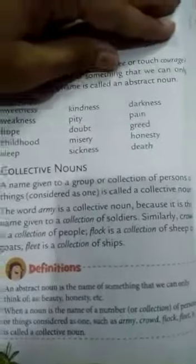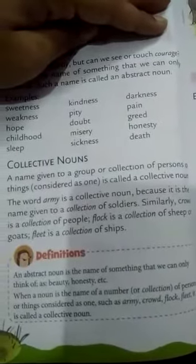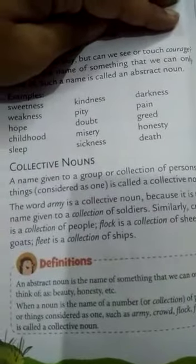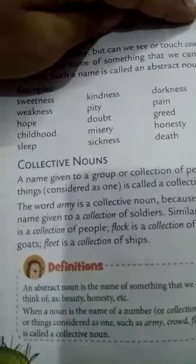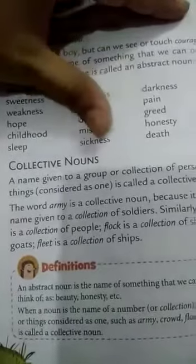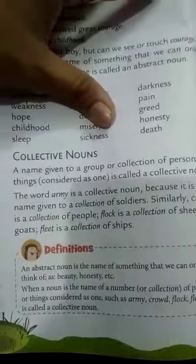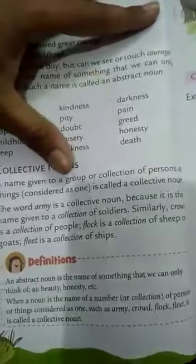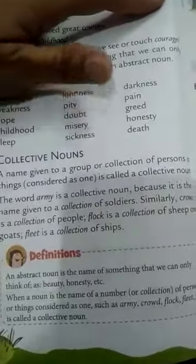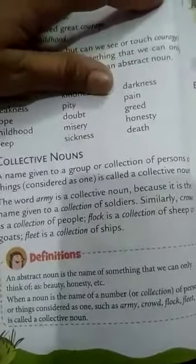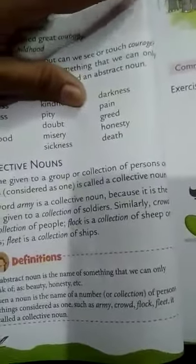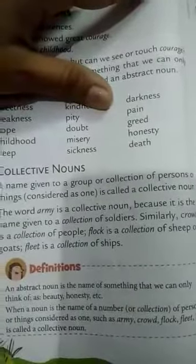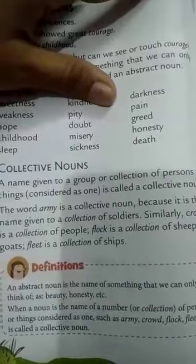An abstract noun is the name of something that we can only think of, such as beauty, honesty, etc. This is the definition of abstract noun. Now for collective noun: when a noun is the name of a number or collection of persons or things considered as one — such as army, crowd, flock, fleet — it is called a collective noun. This is the definition of collective noun.